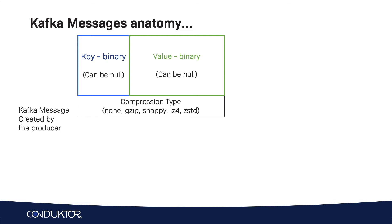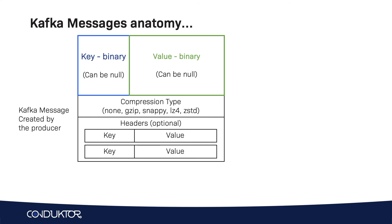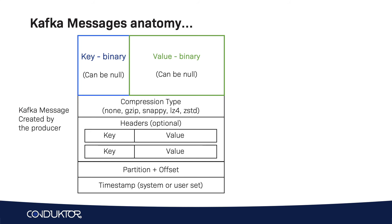Your message can be compressed, and the compression type is indicated as part of the message. None means no compression, but Kafka has four compression types available: gzip, snappy, lz4, and zstd. We also have optional headers, which are key-value pairs — you can have many of those per message, and they are commonly used to add metadata. Once a message is sent into a Kafka topic, it will receive a partition number and an offset ID. Finally, a timestamp is added either by the user or by the system.